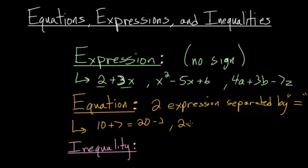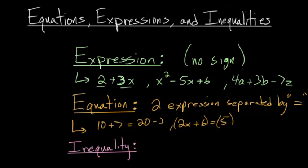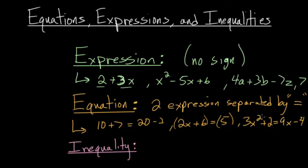You might also see something like 2x plus 6 is equal to 5. In this case, you can actually find a specific x value that makes this equation true. Notice you just have an expression on each side of the equation. Even a single value like 7 is an expression, because there's no sign. And for another equation, we can have something like 3x squared plus 2 equals 9x minus 4 — again, an equation where there is one specific x value that makes it true.